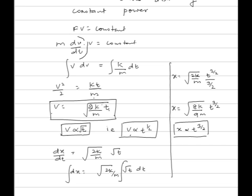For a machine with constant power, velocity is directly proportional to the square root of time. Writing v as dx/dt equals under root (k/m) into under root t and integrating gives x equals (2k/m) under root times t to the power 3 by 2. Simplifying: x equals under root of (8k upon 9m) times t to the power 3 by 2. Therefore displacement x is proportional to t to the power 3 by 2 for any machine delivering constant power.